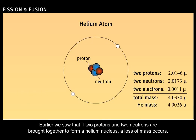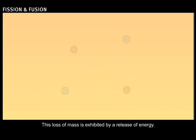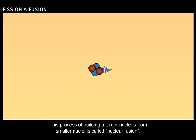Earlier we saw that if two protons and two neutrons are brought together to form a helium nucleus, a loss of mass occurs. This loss of mass is exhibited by a release of energy. This process of building a larger nucleus from smaller nuclei is called nuclear fusion.